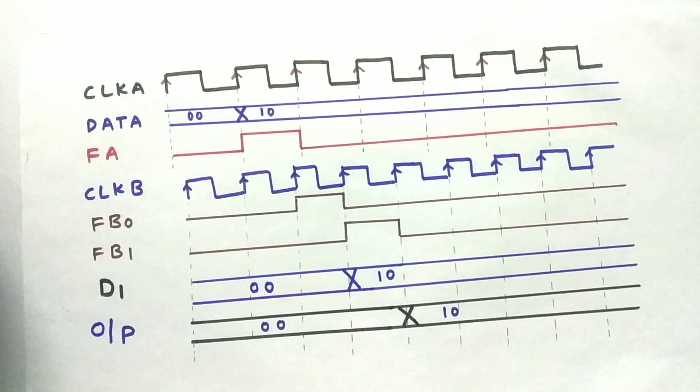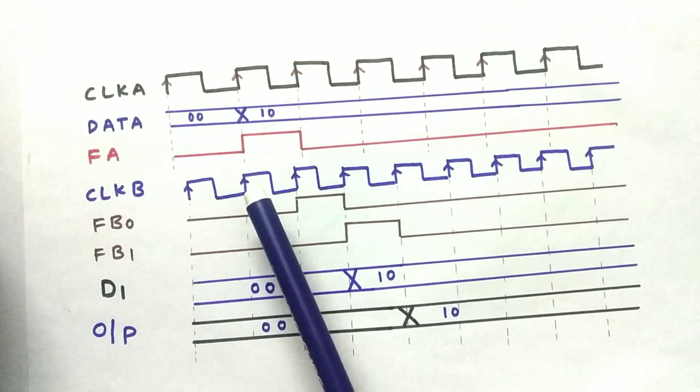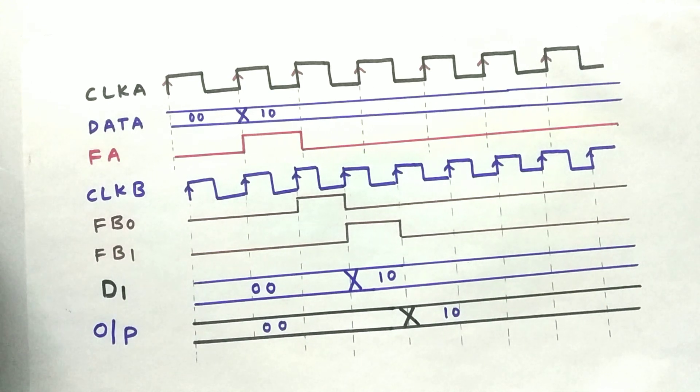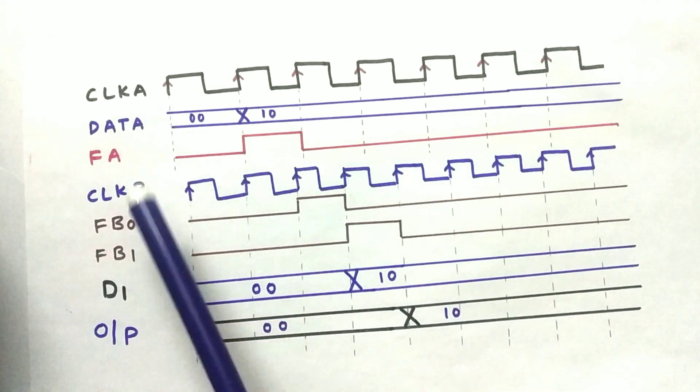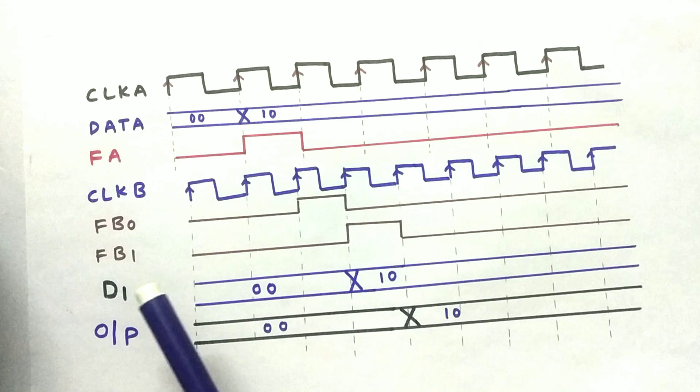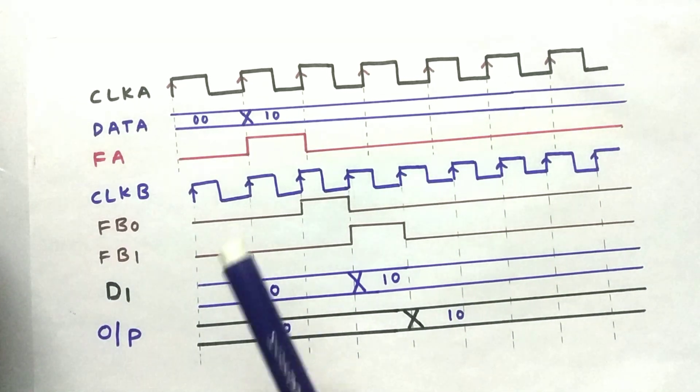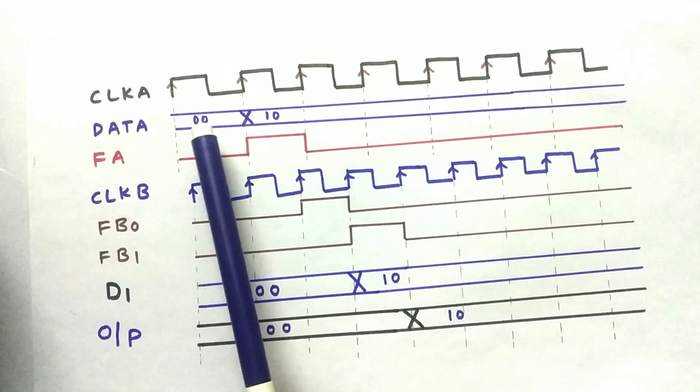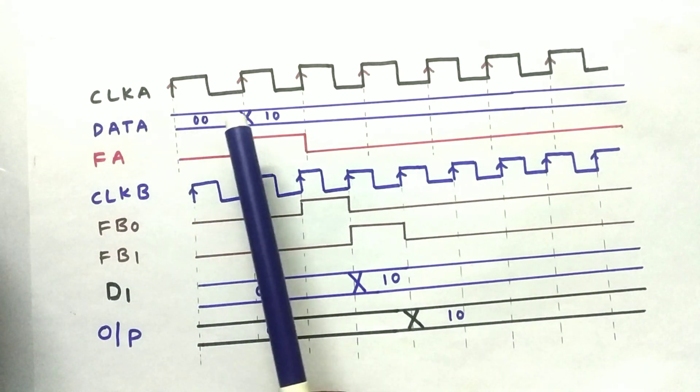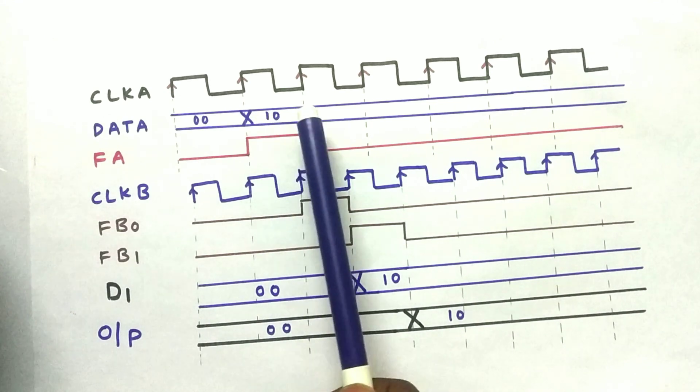As you can see over here, the clock A and clock B time periods are varying. Clock A time period is higher compared to clock B time period. Now let us send the data. As you can see over here, the data was 00 at first when there was no data. And now we want to send 10 to the output.